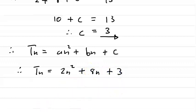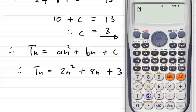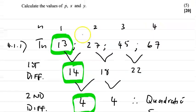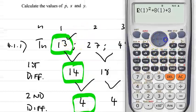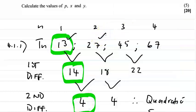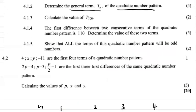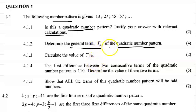The last step is to test the sequence to see whether it works. For n equals 1: 2 times 1 squared plus 8 times 1 plus 3 equals 13. That matches our first term. Checking the second term confirms T2 equals 27. So our general term is correct. It's very important to do the check because the next questions rely on this general term.